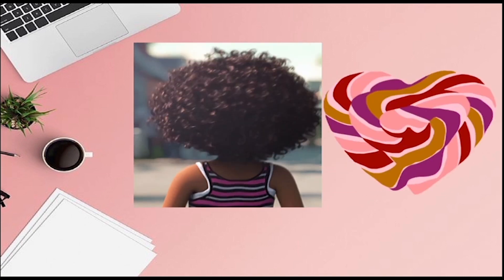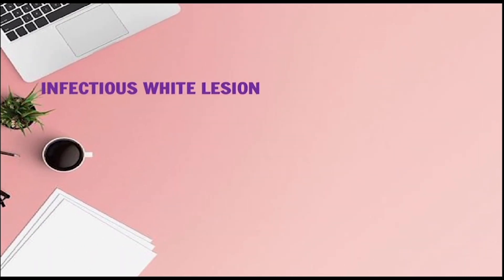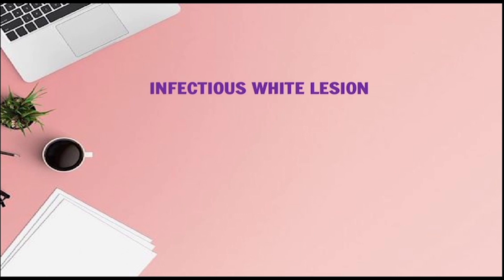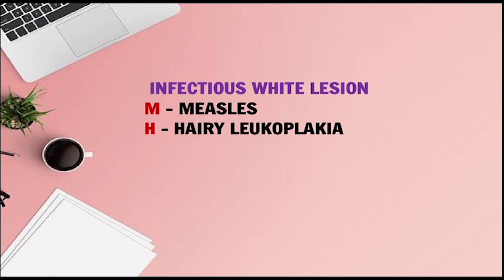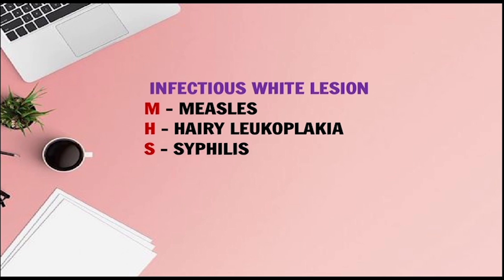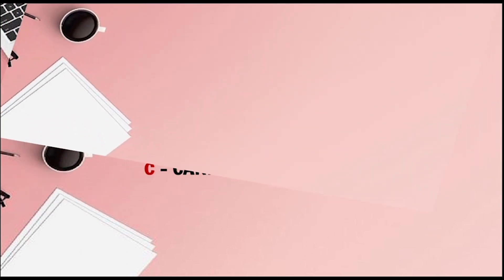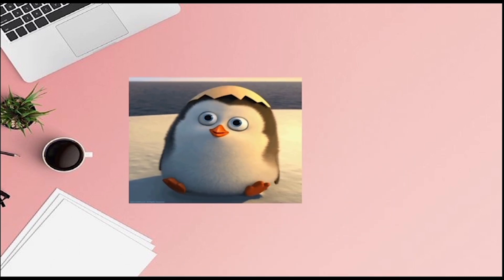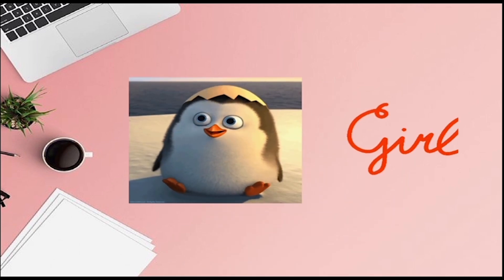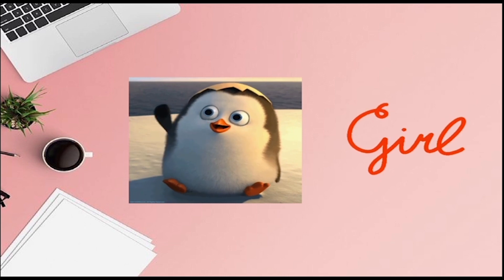Luke is dressed as a CID going to meet the 'Haired Cephali with a candy.' This is talking about infectious white lesions. M for Measles, H for Hairy Leukoplakia (hairy), S for Syphilis, and the candy represents Candidiasis.